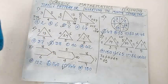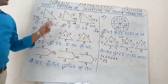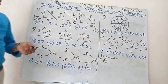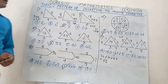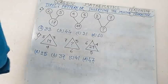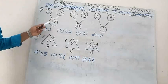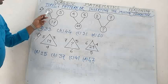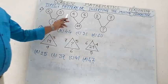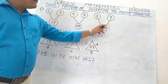So these are some different kinds of pattern or inserting the missing character problems. Now Number 6. Here 3 circles are there.